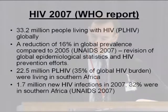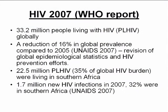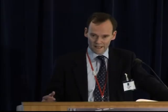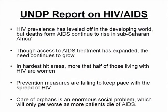WHO reports figures around HIV: 33.2 million people living with HIV, with a reduction of 16% in global prevalence compared to 2005. 22.5 million with HIV are living in Southern Africa, and 1.7 million new HIV infections are occurring in Southern Africa. The report says that prevalence has leveled off in the developing world, but deaths continue to occur, and though access to AIDS treatment has expanded, the need continues to grow.